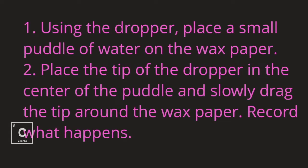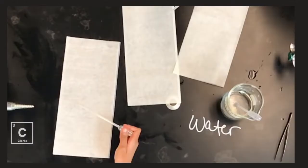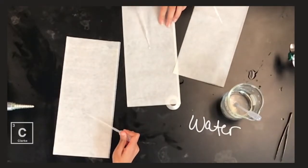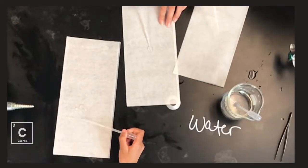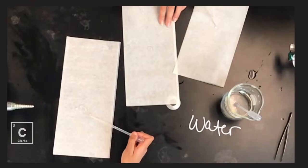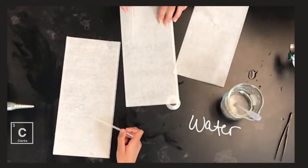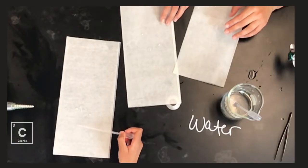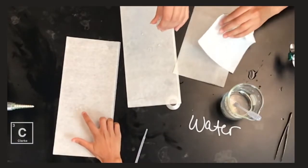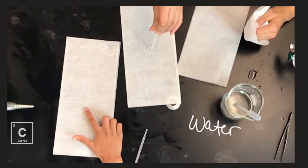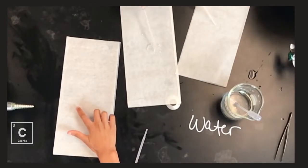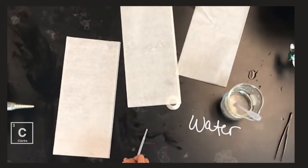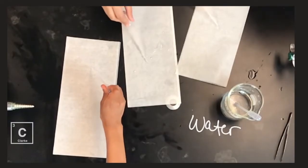Using the dropper, place a small puddle of water on the wax paper. Place the tip of the dropper in the center of the puddle and slowly drag the tip around the wax paper. Record what happens. Oh, go ahead. This is fun. You can put several drops and make them blend together. I'm gonna put some over here.